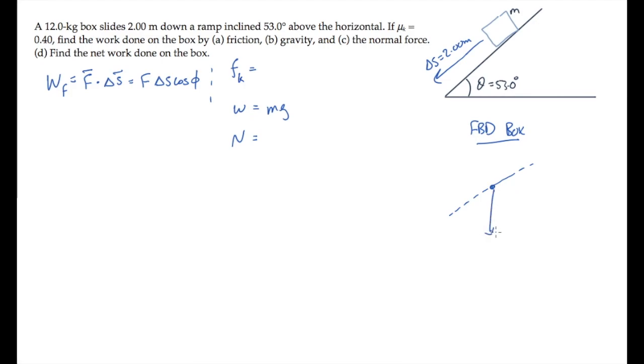There are three forces acting on the box. Its weight is straight down, the normal force is perpendicular to the ramp, and friction opposes the motion, so it's directed up the ramp.